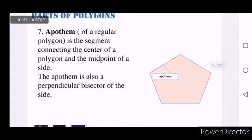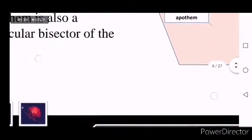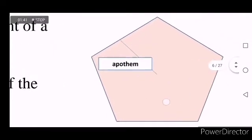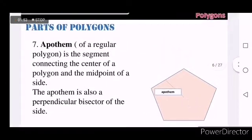The next is called apothem. This is the segment connecting the center of a polygon and the midpoint of a side. The apothem is also a perpendicular bisector of the side. If you locate the center and extend a line to the midpoint of this side, that blue line is called apothem. Apothem is very important for the following formulas.